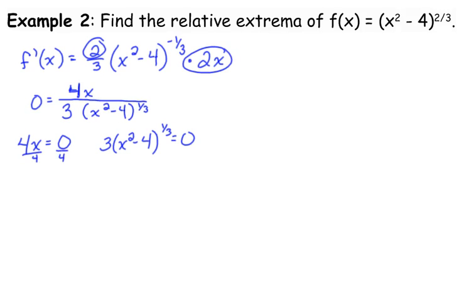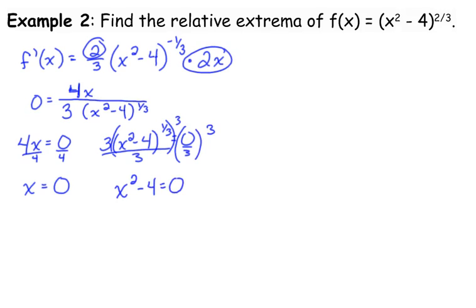So not only do we set the numerator equal to zero, we also set the denominator equal to zero. Setting the numerator equal to zero: divide by 4 gives x equals 0. Setting the denominator equal to zero: x squared minus 4 equals zero. We can solve by adding 4 and taking the square root — don't forget the plus or minus — giving us plus or minus 2. You could also factor as x plus 2 times x minus 2. With x squared involved, we usually have two solutions.